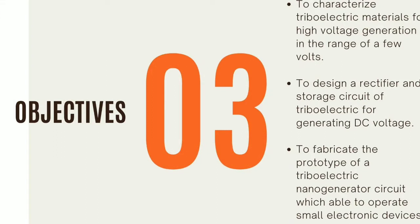The objectives for this project are: to characterize triboelectric materials for high voltage generation in the range of a few volts. Second, to design a rectifier and storage circuit of triboelectric for generating DC voltage. Last, to fabricate the prototype of a triboelectric nano generator circuit which is able to operate small electronic devices.